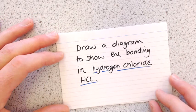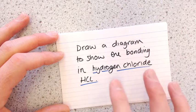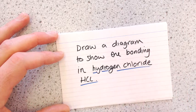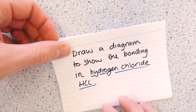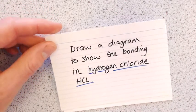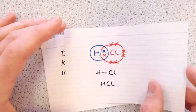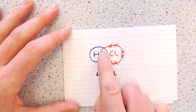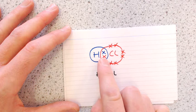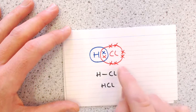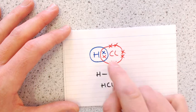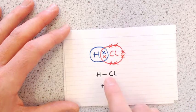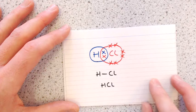Hydrogen chloride: hydrogen can be argued as a metal or non-metal, but we'll use the covalent method. Hydrogen needs two electrons in its outer shell — it gets that by sharing one electron with the chlorine. Chlorine needs to get to eight. Between the hydrogen and chlorine there is one pair of shared electrons. You represent this with a line, or write it as HCl.